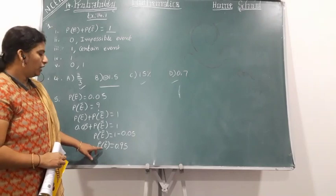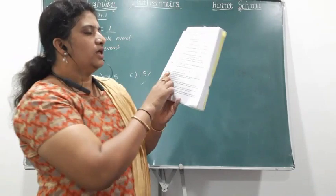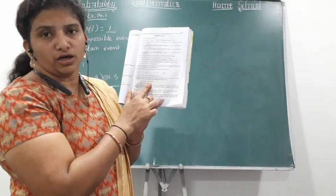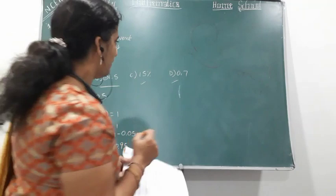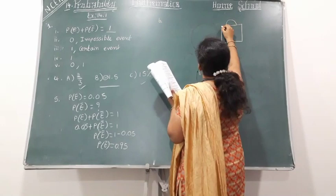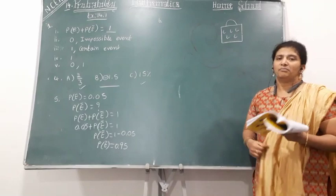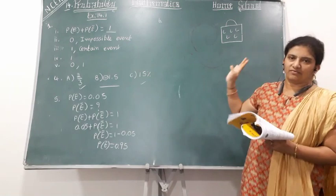The probability of getting not E is 0.95. That is the answer to the fifth problem. Let's start with the sixth problem — it is very easy. A bag contains lemon flavored candies only. Let me draw a bag on the board. Marlini takes out one candy without looking into the bag. The event questions are starting here.